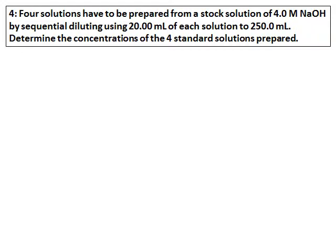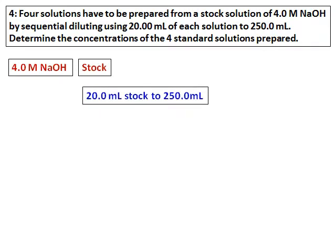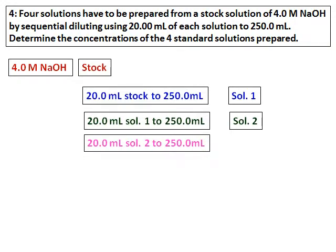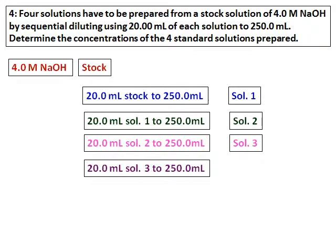Both solutions have to be prepared from a stock solution of 4.0 molar NaOH. Every time we take 20 milliliters from the previously prepared solution and make it into 250 milliliters. Determine the concentration of the 4 standard solutions prepared. We have 4 molar NaOH as the stock solution. We take 20 milliliters and make it into 250 milliliters — that's Solution 1. From Solution 1, we take 20 milliliters and make it into 250 milliliters — that's Solution 2. From Solution 2, we take 20 milliliters and make it into 250 milliliters — Solution 3. From Solution 3, we take 20 milliliters and make it into 250 milliliters — Solution 4.